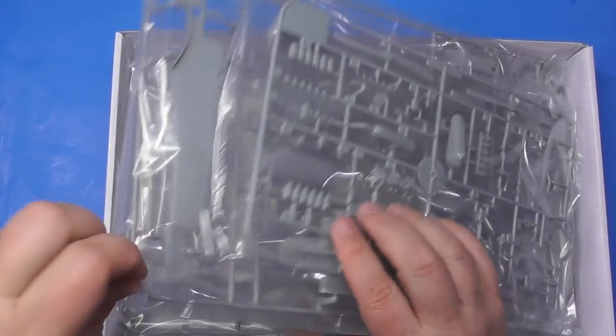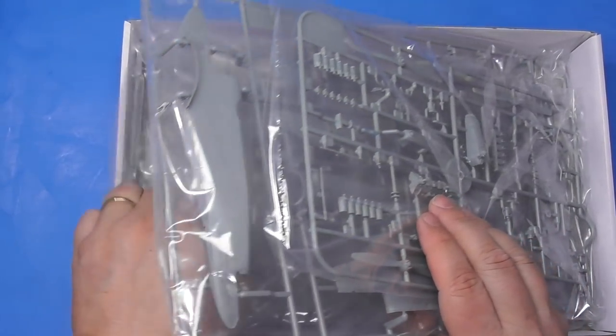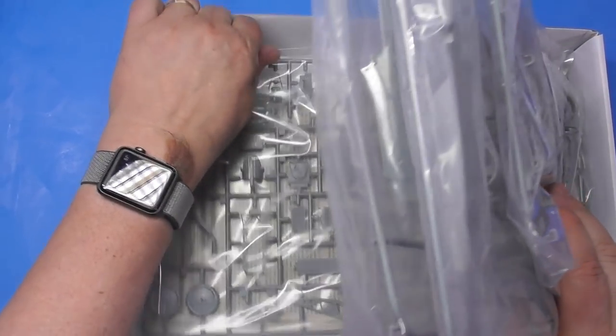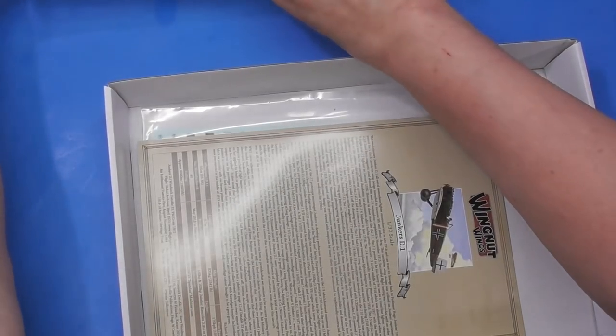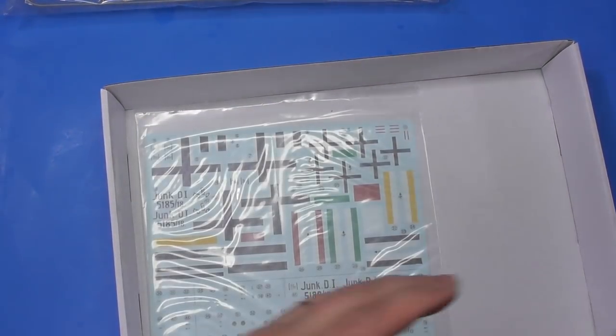One, two, three, four sprues. One instruction sheet. One decal sheet. One empty box.